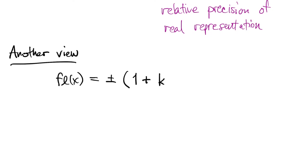So, that's 1 plus, well, some multiple of 2 to the minus d, which is the spacing in one of these intervals, and then the whole thing gets multiplied by a factor, 2 to the e, for scaling.